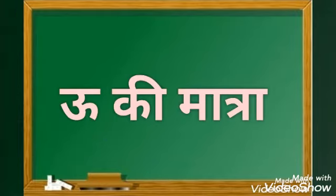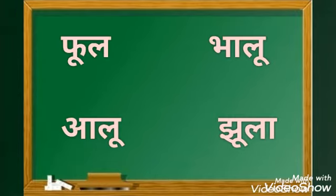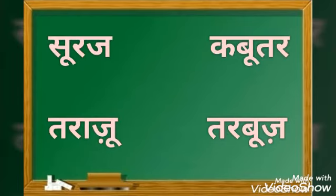दीर्घ ऊ की मात्रा: फूल, आलू, भालू, तराजू, कबूतर, तरूज.